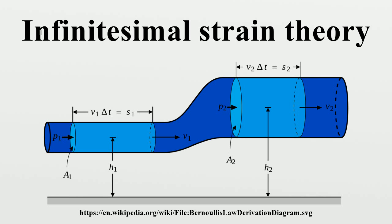For infinitesimal deformations of a continuum body, in which the displacement and the displacement gradient are small compared to unity, it is possible to perform a geometric linearization of any one of the strain tensors used in finite strain theory, e.g., the Lagrangian strain tensor and the Eulerian strain tensor. In such a linearization, the non-linear or second-order terms of the finite strain tensor are neglected.